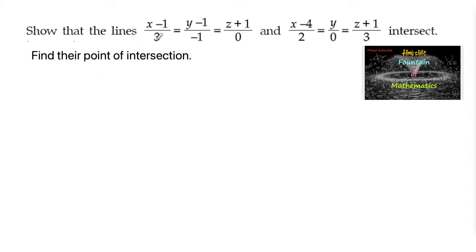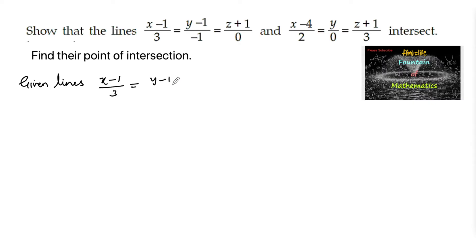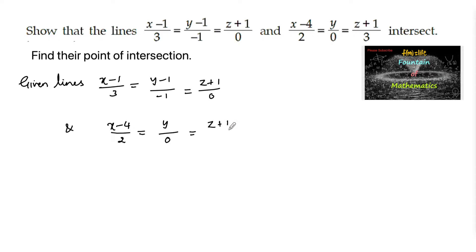Show that the lines (x-1)/3 = (y-1)/(-1) = (z+1)/0 and (x-4)/2 = y/0 = (z+1)/3 intersect, and find their point of intersection. The given lines are (x-1)/3 = (y-1)/(-1) = (z+1)/0 and (x-4)/2 = y/0 = (z+1)/3.